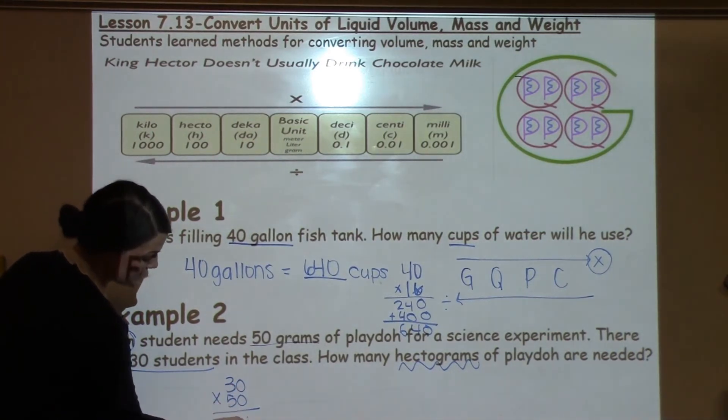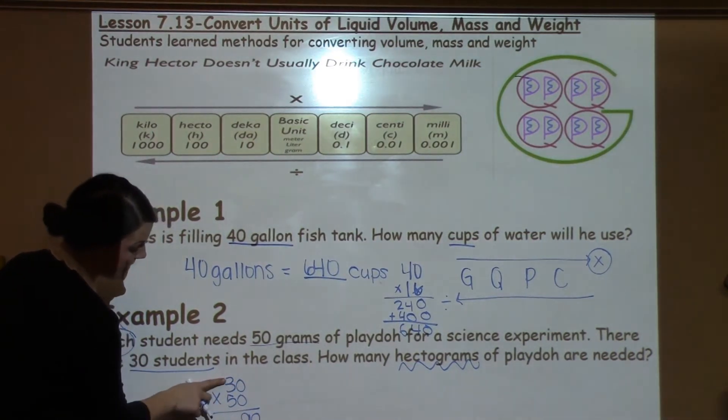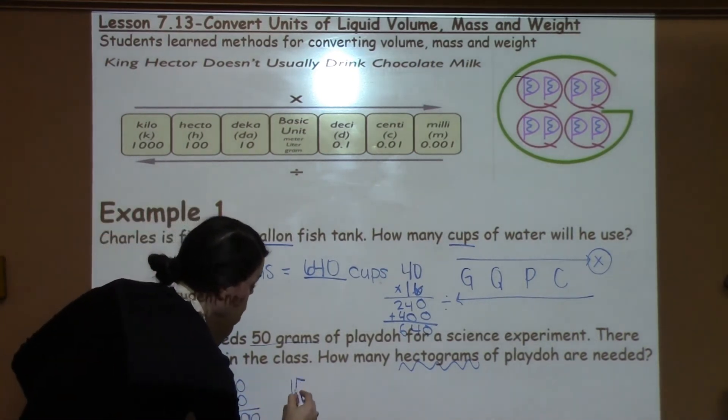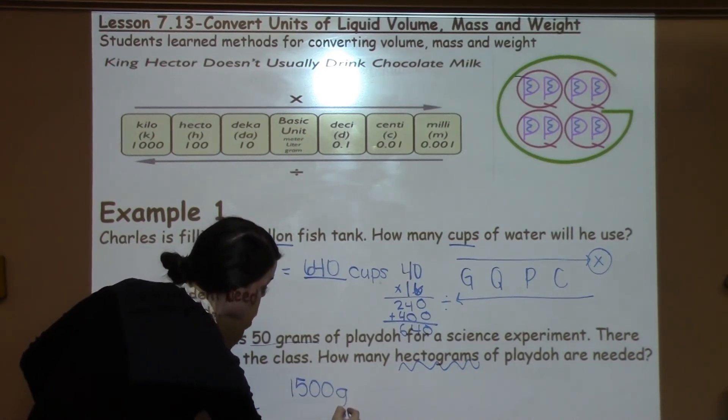Well zeros I could just take off and put down below, and then I just have 3 times 5 left, which is 15. So I know that I need 1500 grams.